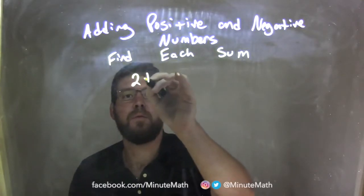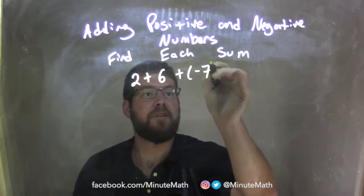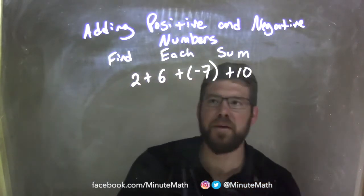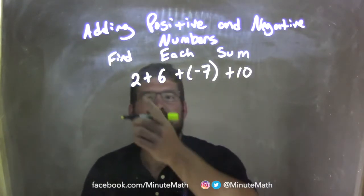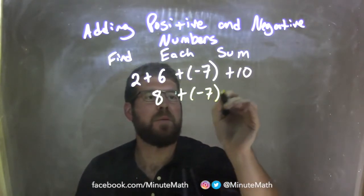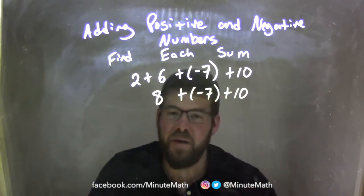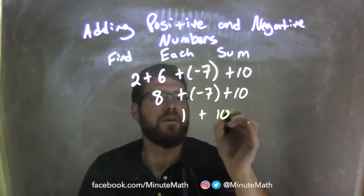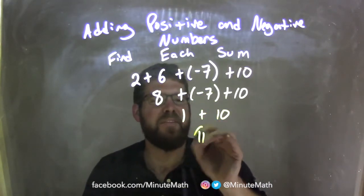2 plus 6 plus a negative 7 plus 10. I'll start reading left to right. 2 plus 6 is 8. Then I bring down the negative 7: 8 plus a negative 7 is 8 minus 7, which is just 1. Now 1 plus 10 is 11. And there we are.